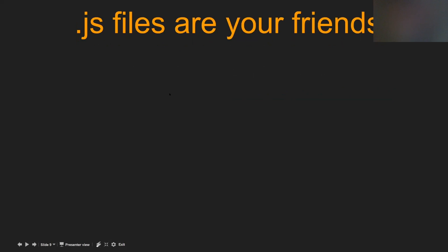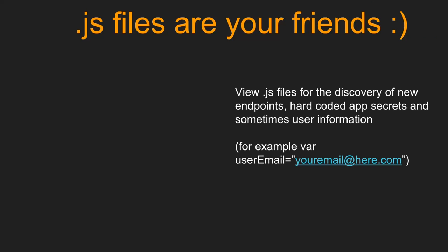Finding JavaScript files on the Wayback Machine is great because they're your friends — they store lots of information including more URLs and endpoints to attack, hard-coded information such as user email addresses, methods for generating CSRF tokens, and interesting things like developer notes. I've sometimes seen developers leave notes in JavaScript files referencing internal domains I'd never seen before. If you then find a server-side request forgery vulnerability, you can start probing what's actually on those internal endpoints.